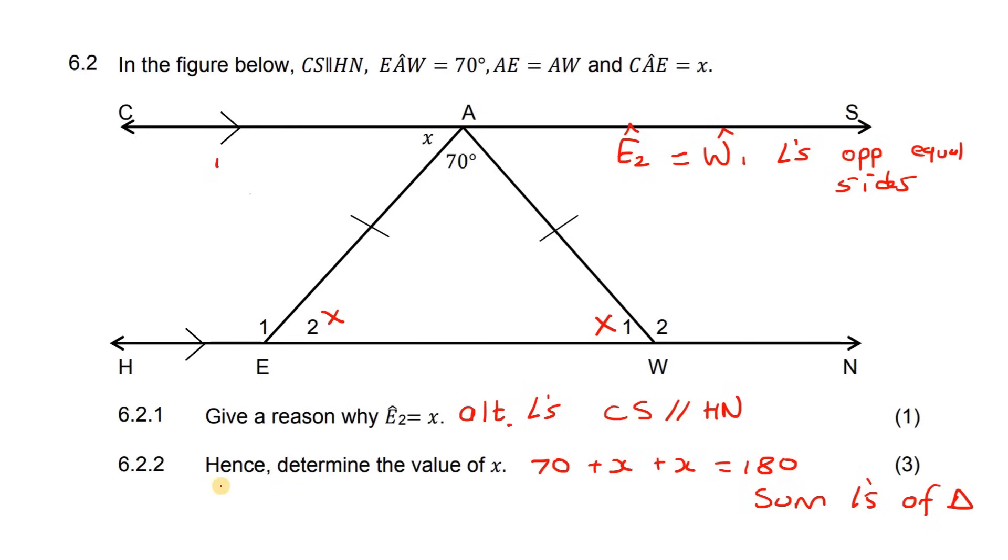That gives us 70 + 2x, since x plus x is 2x. Now we have an equation. We'll take the 70 over to the other side, which gives us 2x = 110. Divide both sides by 2, so x = 55 degrees.